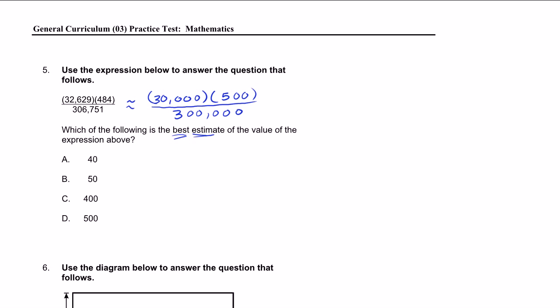So the first thing I want to do, maybe I'll divide the top and the bottom by 3. So this 30,000 will become 10,000. And this 300,000 will become 100,000.